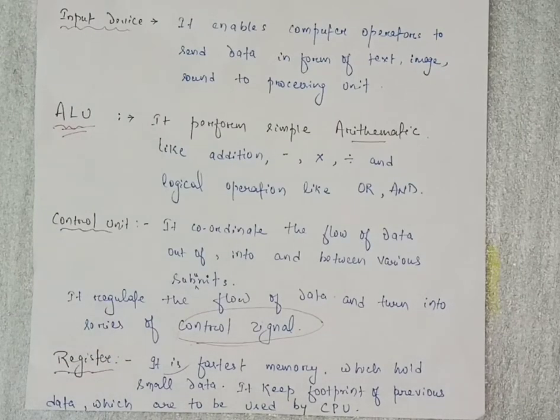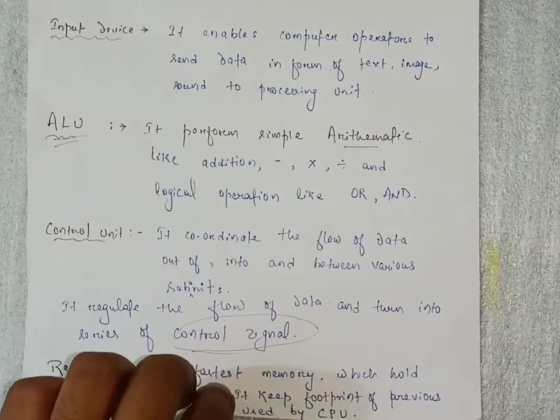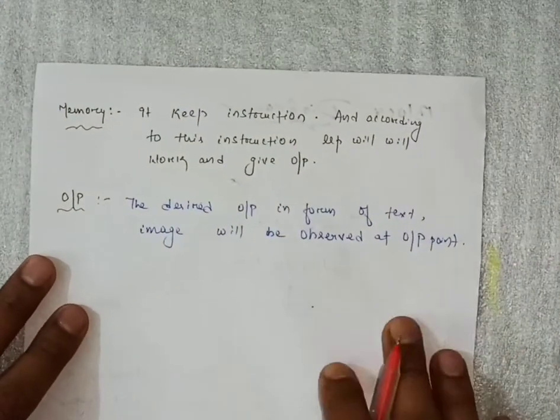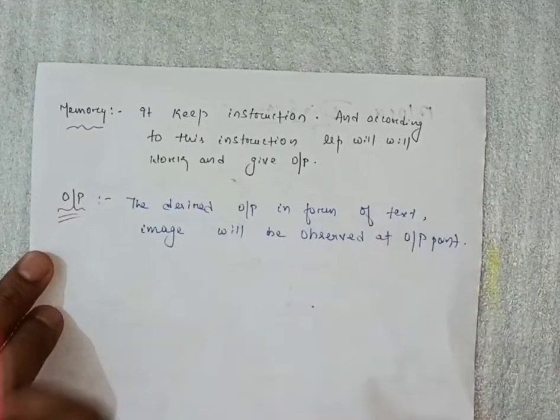And it will be used by the CPU. The last one is output. What will output do? The desired output in form of text, image.